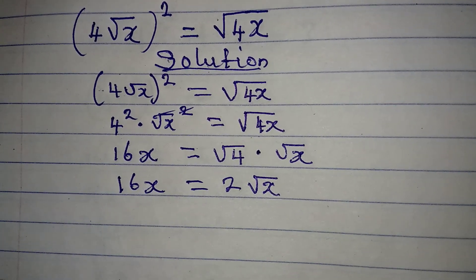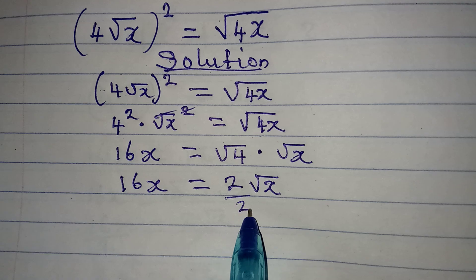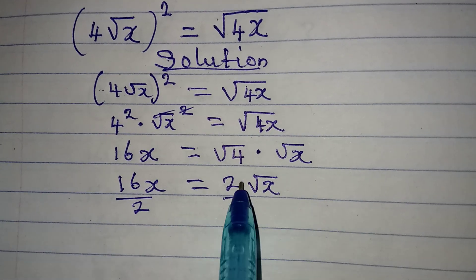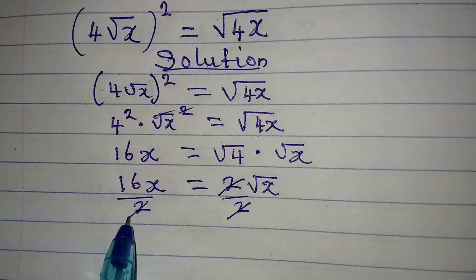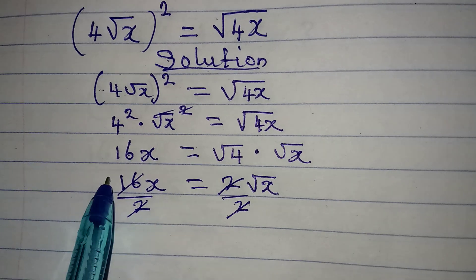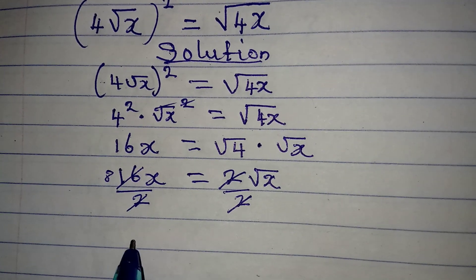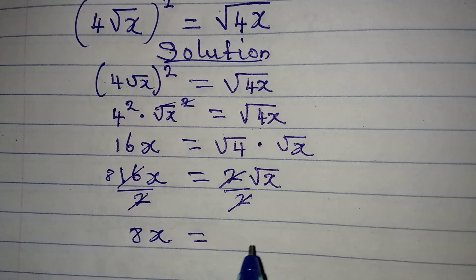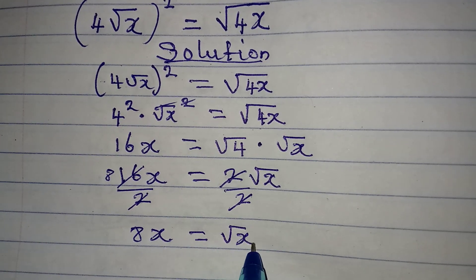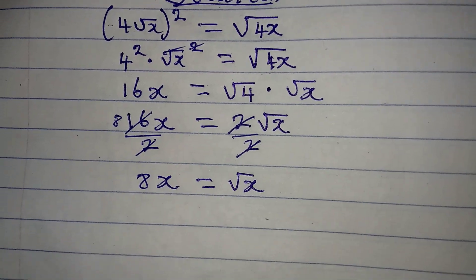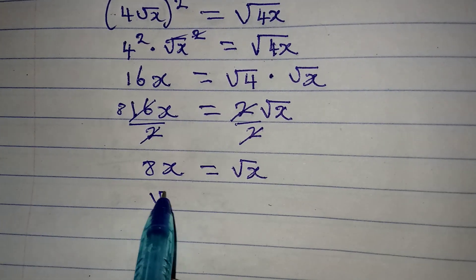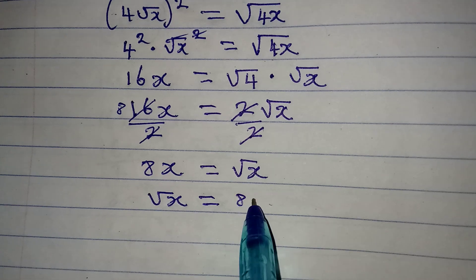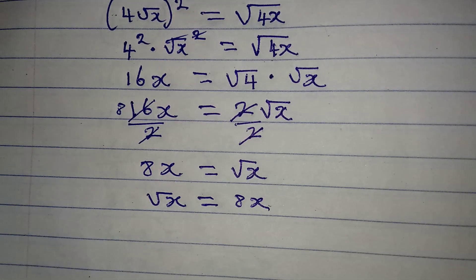From here we divide both sides by 2. The 2 cancels, and 16 divided by 2 gives us 8, so we have 8x equal to the square root of x. Turning it around, we have the square root of x equal to 8x.